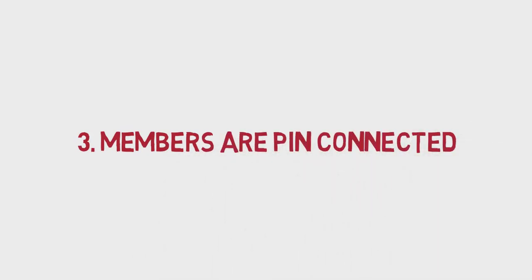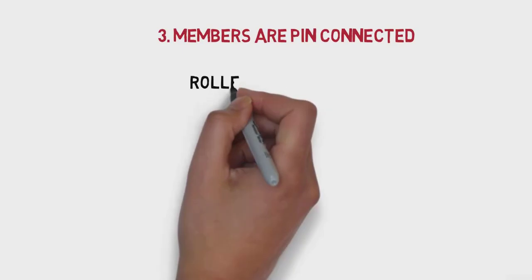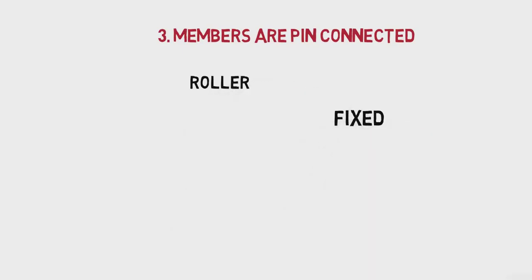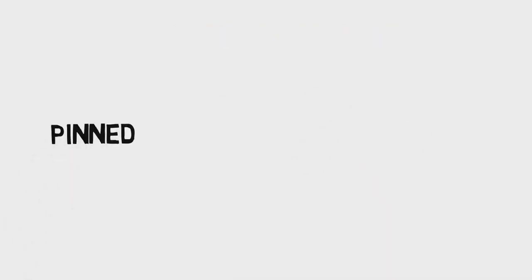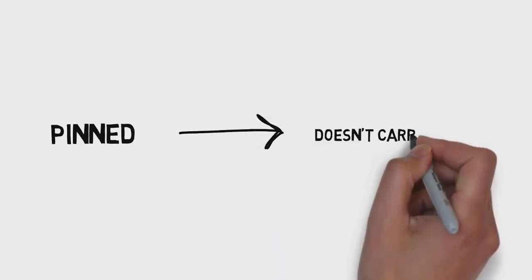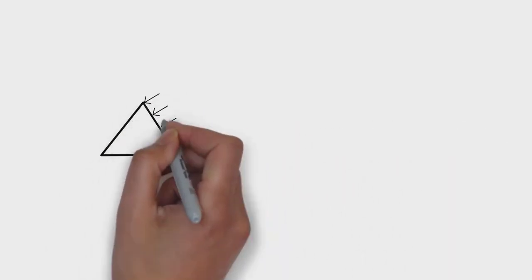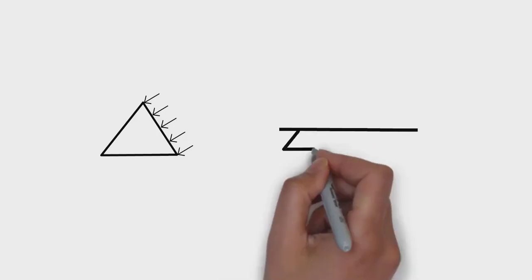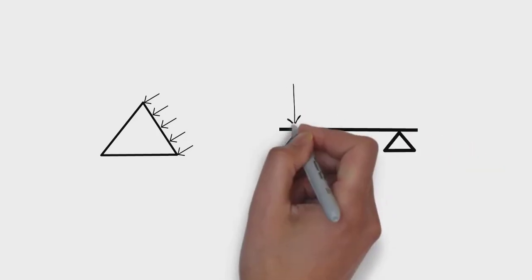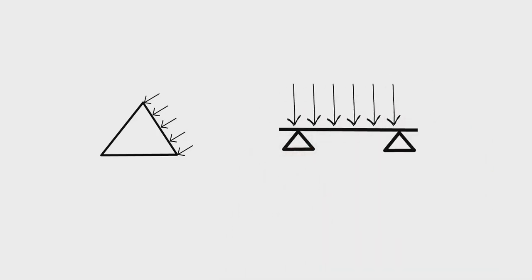If you remember from previous courses, we have three major supports: they are fixed, roller, and pin. A pin or hinge doesn't carry any moment, so it is moment-free. If we would have transverse load on truss members, it would act like a beam and it will result in moment on the joints.